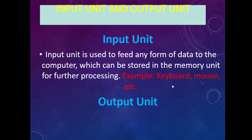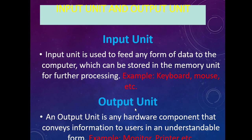What is the output unit? The output unit gives the result to the user. Whatever result we get is displayed on the output devices. It is a hardware component that conveys information to the user in an understandable form — in whatever format a human can understand. Examples of output units are the monitor and printer.